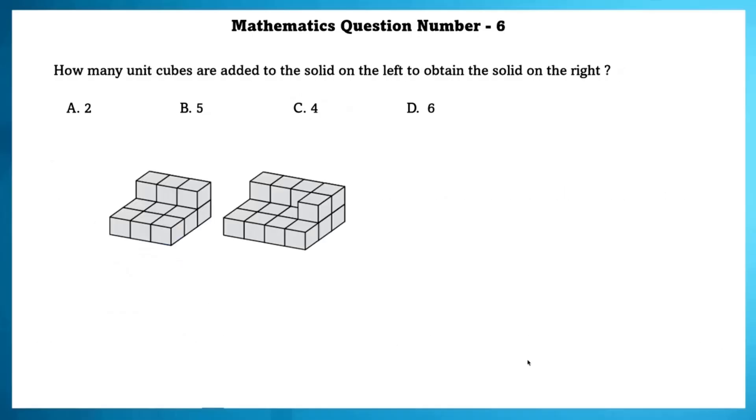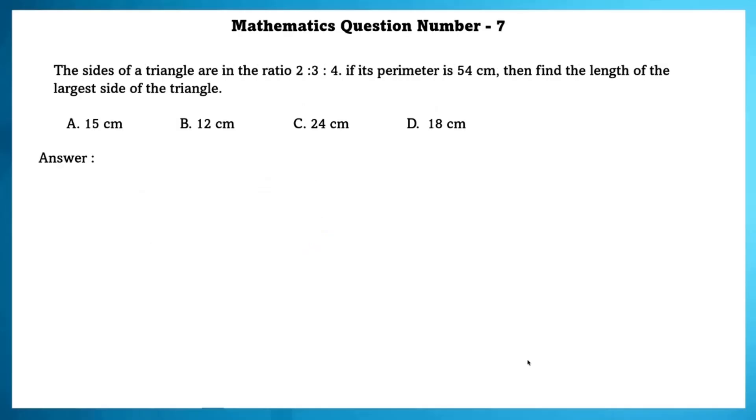Mathematics question number 6. How many unit cubes are added to the solid on the left to obtain the solid on the right? 5 more unit cubes need to be added to obtain the right side solid. Mathematics question number 7. The sides of the triangle are in ratio 2, 2 is to 3 is to 4.